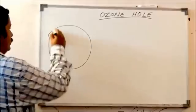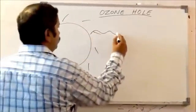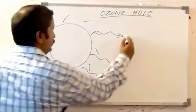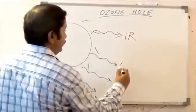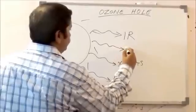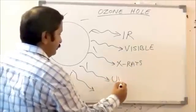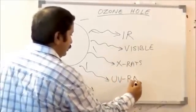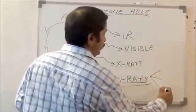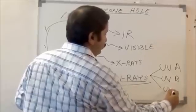This is our sun. We know that the sun gives out many different kinds of radiation into the atmosphere. Some of them are infrared, some of them are X-rays, some of them which you can see are called visible light, and some of them are ultraviolet radiation — UV rays. UV is of three types: UVA, UVB, and UVC.